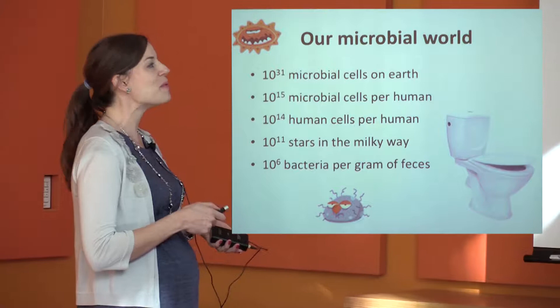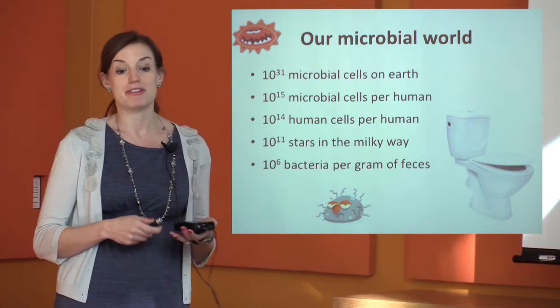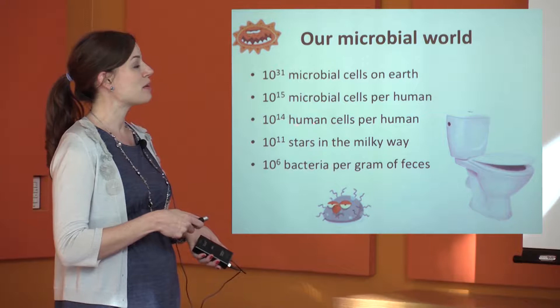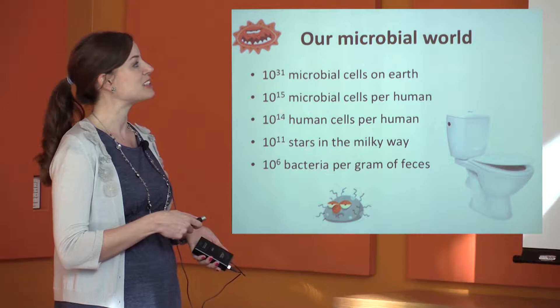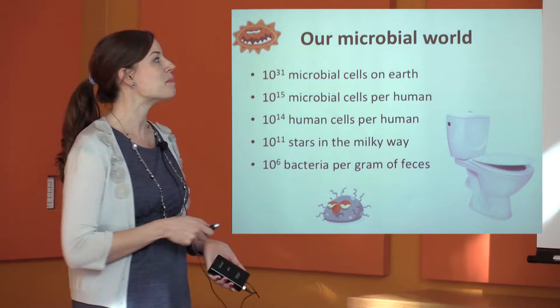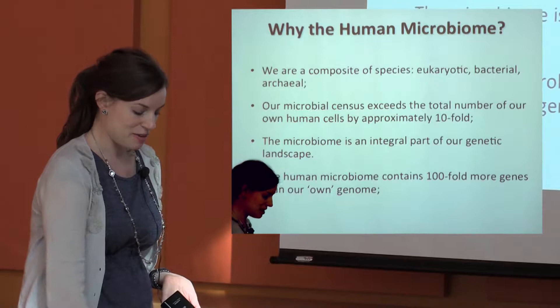Starting from the estimate of bacteria per gram of feces — 10 to the 6 bacteria — and putting that into perspective with the stars of the Milky Way, human cells per human, and microbial cells per human, this suggests that we contain a ratio of 10 microbial cells per single human cell in our body. That's pretty extraordinary, which makes us actually more microbial than human if you think about it in terms of numbers.